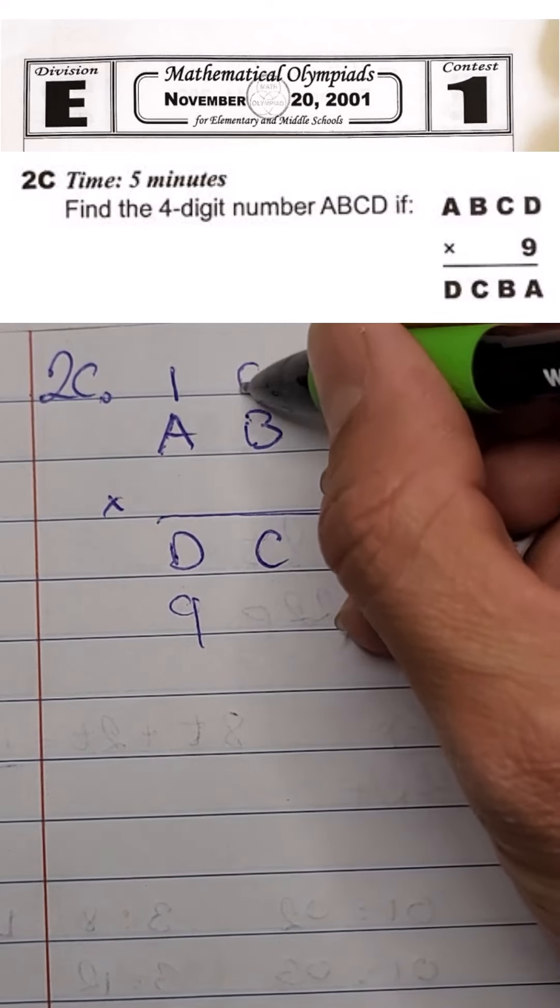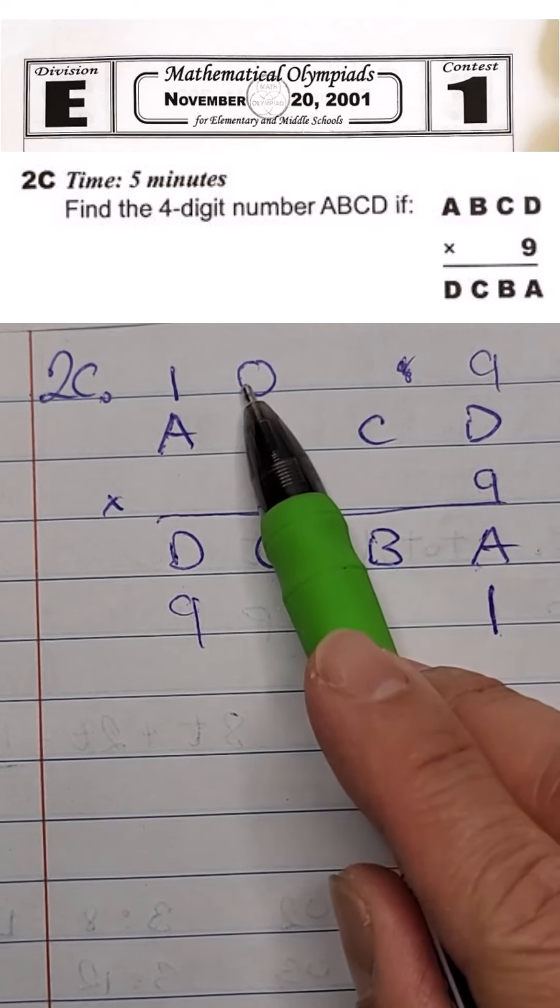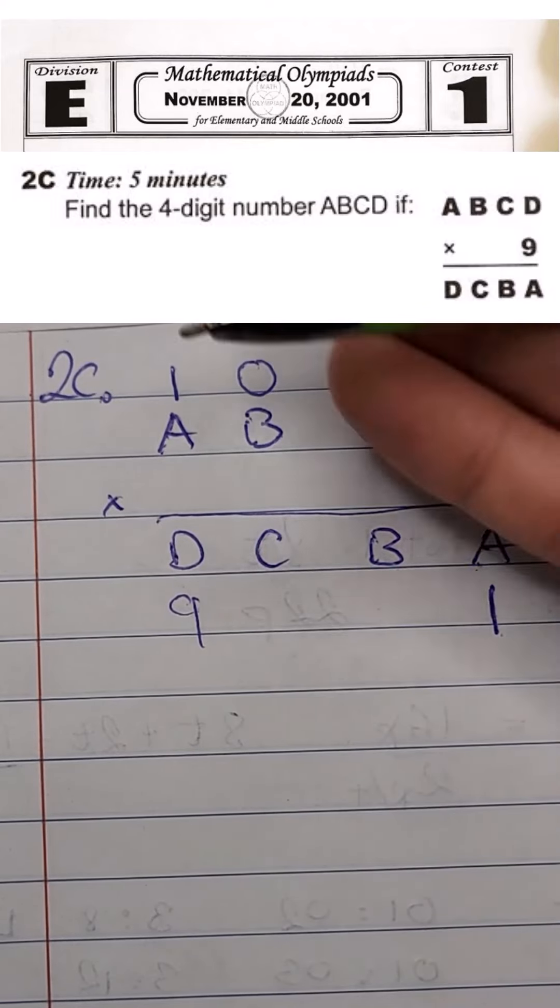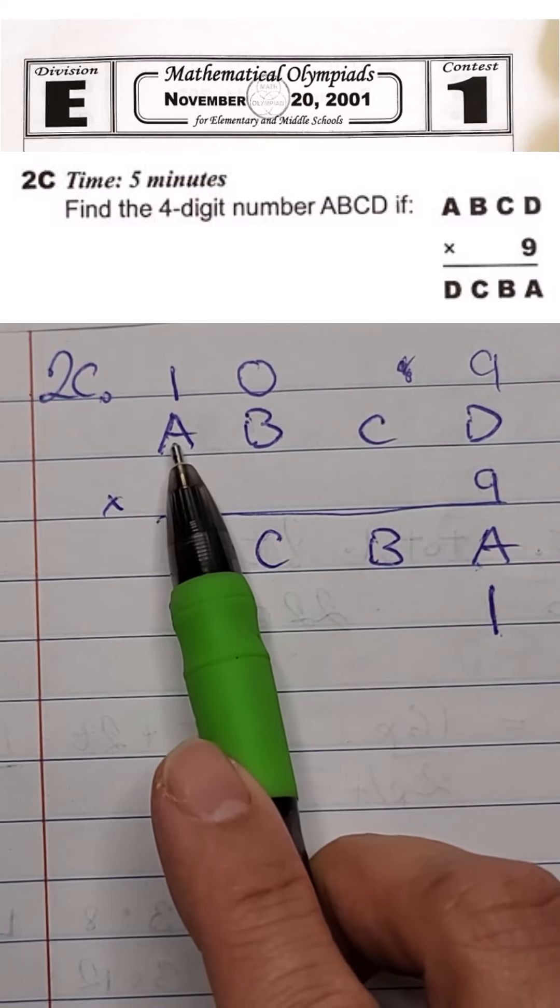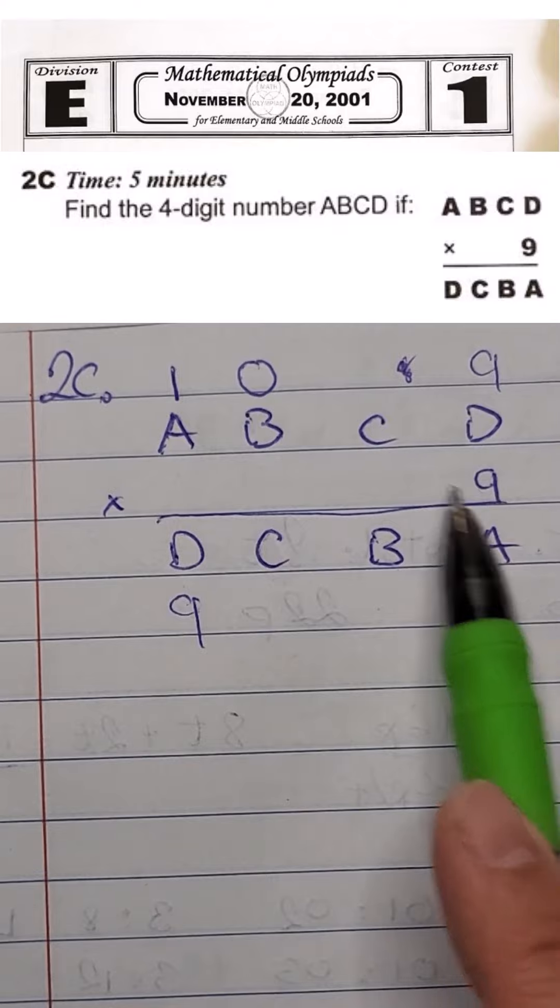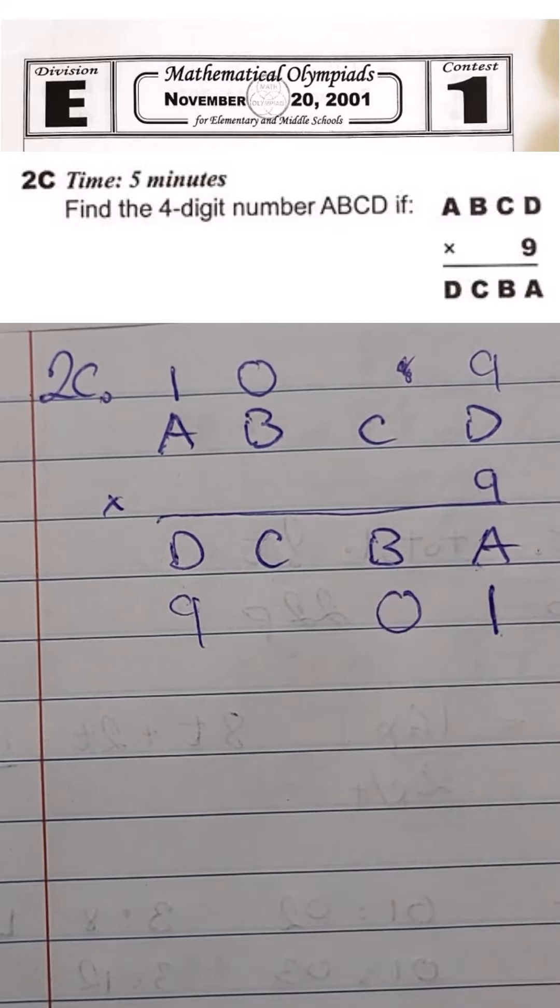B has to be 0 because 9 times B equals 0 and then we add whatever that we carry over still not going to exceed 10. Therefore, the 9 times 1 equals 9 will remain true. So now we know B is 0.